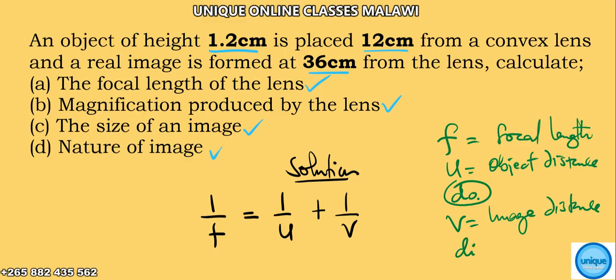Whereas v, this one is the image distance. In some textbooks they use 'di' for the image distance. So from the question here we have our u—the object is placed at this distance, so this one here is our u.